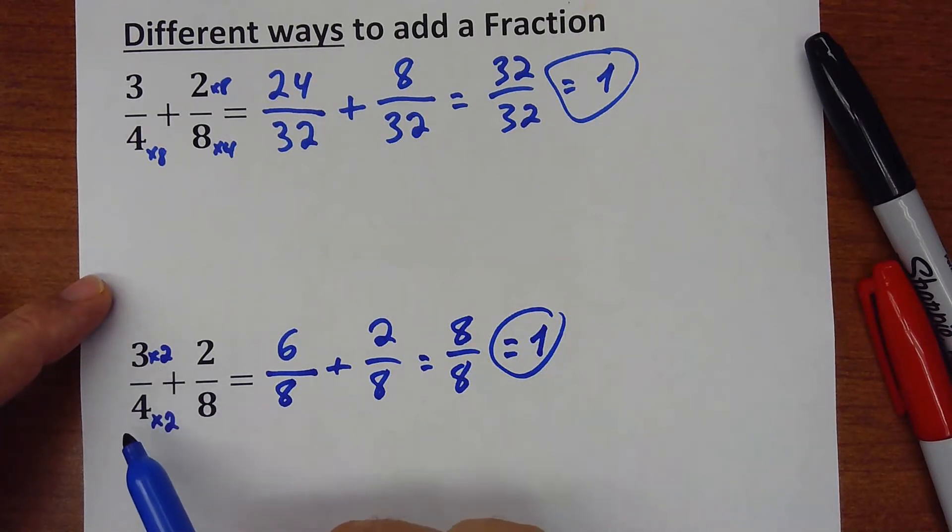Because what we do, we play with the equivalent fractions. We can multiply and divide by the same number, top and bottom, to make my goal, which is to have the same number in the denominator.